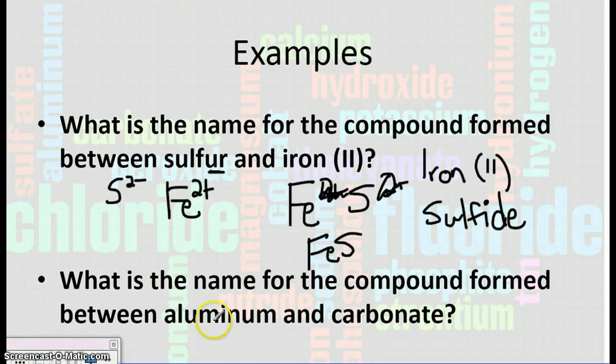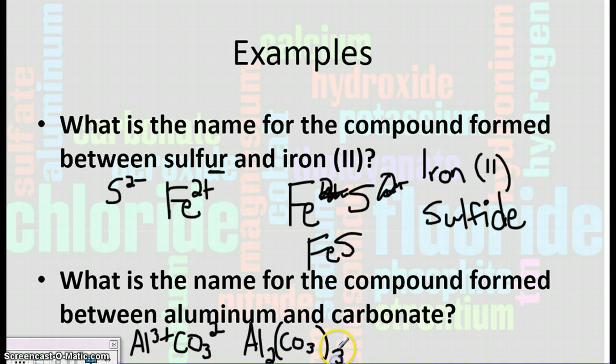The name for the compound formed between aluminum and carbonate. Well, remember that aluminum is Al, and it's a 3+. Carbonate is a polyatomic: CO3, 2-. And then we swap and drop just to remind ourselves of some formula stuff. We get Al2 CO3. And then that needs to go in parentheses. And then there are 3 of them.